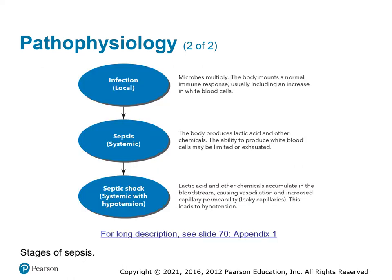Here is the diagram for the stages of sepsis. It basically starts with a local injury that becomes infected, gets more generalized, and becomes a systemic problem, also known as sepsis. When it starts to affect the person's mentation and other bodily functions, and causes vasodilation, it develops into septic shock.